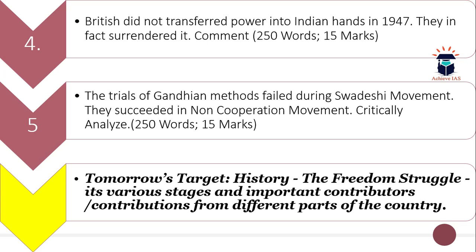The fifth question is: 'The trials of Gandhian methods failed during the Swadeshi movement but succeeded in the Non-Cooperation Movement — critically analyze.' You have to critically analyze the Gandhian methods applied in the Swadeshi movement and Non-Cooperation Movement. The word limit is 250 and maximum marks are 15.